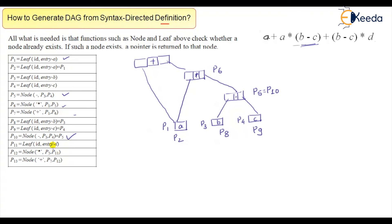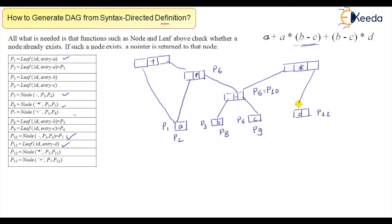p11 is another leaf entry for 'd'. Then there is a star multiplication node whose two pointers are p5 and p11. This new multiplication node is assigned as p12. The pointer p12 is assigned — this was also labelled as p7.